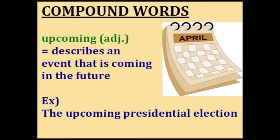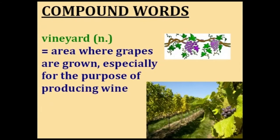Upcoming. This word describes an event that is coming up in the future. For example, if a presidential election will be held next month, you could call it the upcoming election to make clear you're talking about the one in the future and not the one in the past. Vineyard. A vine is a type of plant that climbs up a surface as it grows, and grapes grow on vines. A yard is an area of land, so a vineyard is an area where grapes are grown, especially for producing wine.